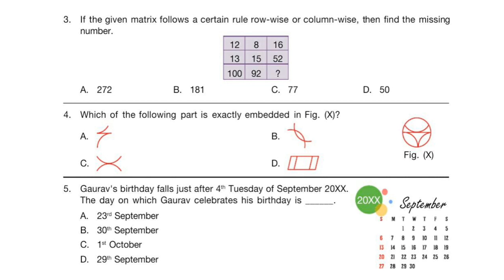Question 3. If the given matrix follows a certain rule row-wise or column-wise, then find the missing number. Now look at this table.